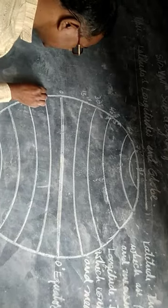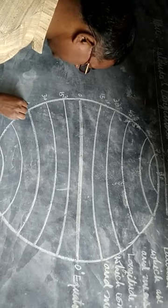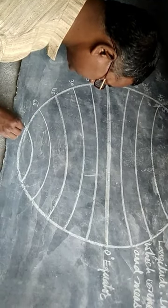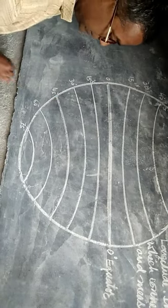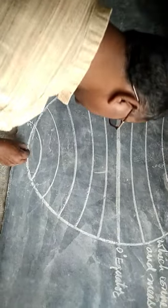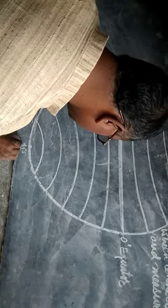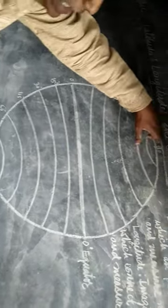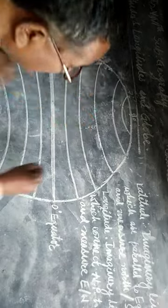उसी तरह यह 15 डिग्री South, 30 डिग्री S, 45 डिग्री S, 60 डिग्री S, 75 डिग्री S, और यह 90 डिग्री S जो होगा वह South Pole कहलाएगा। यह South Pole है और यह North Pole है। Total Latitudes कितने हैं? 90 है।